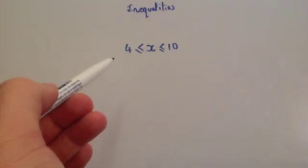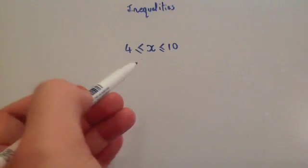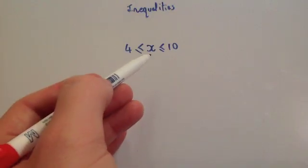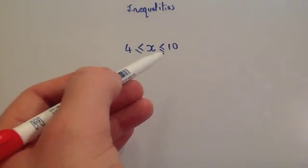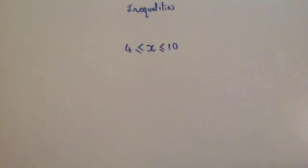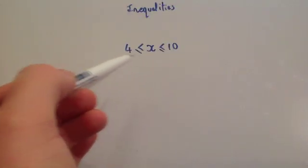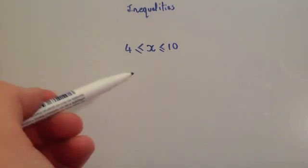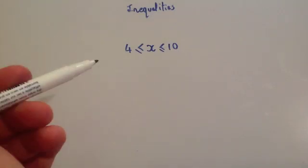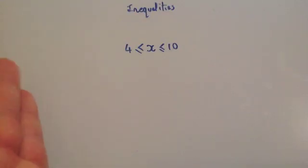Sometimes you get inequalities that have two signs. This reads: X is bigger than or equal to 4 but less than or equal to 10. That means X can be any value between 4 and 10, including 4 and 10 — so it could be 4, 6, 7, all the way up to and including 10.